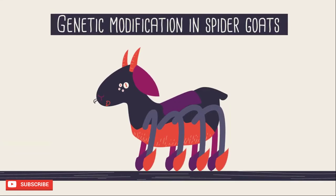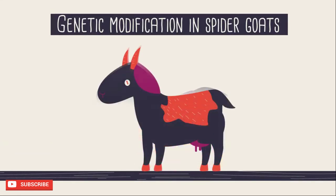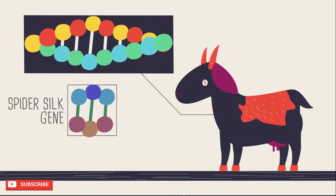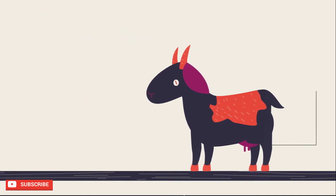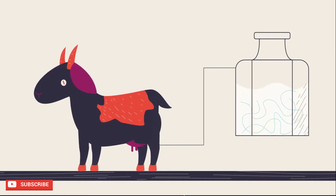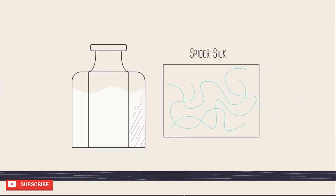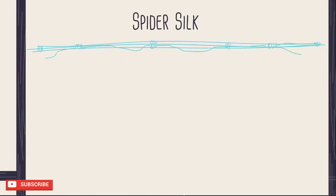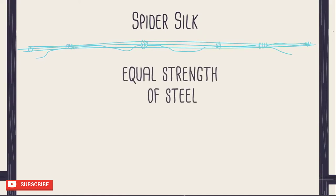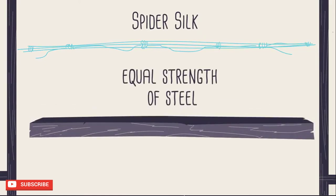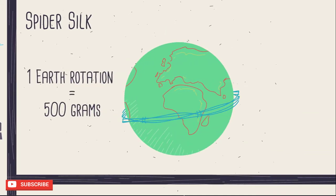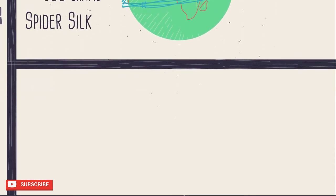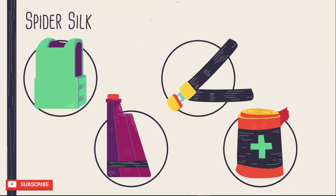Spider goats are also a great example of a genetically modified organism — they aren't as scary as they sound. They're goats that have had the spider silk gene inserted into their DNA, so when female goats lactate and produce breast milk, the milk contains spider silk. The spider silk is pretty incredible: it's as strong as steel, but so light that a strand long enough to circle the earth would weigh less than 500 grams. So there are thousands of uses for such a unique material.